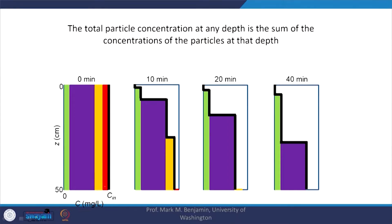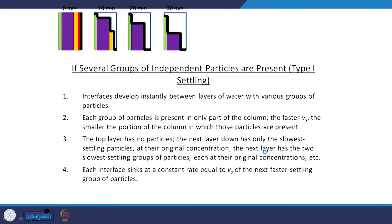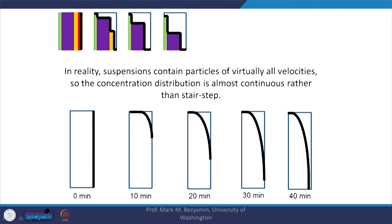The profile at any depth shows the total concentration as the sum of concentrations of particles at that depth. A more realistic scenario is when suspensions contain particles of virtually all velocities — rather than a step-kind distribution, we have a continuous distribution.